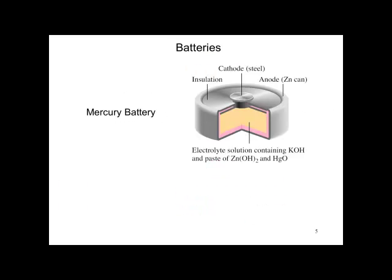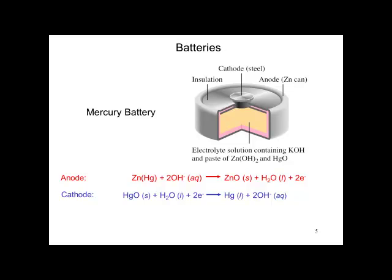Another common battery is the mercury battery. Here we have an anode of the zinc can. The cathode is the little nipple in the middle, the steel. The electrolyte is a solution containing potassium hydroxide and a paste of zinc hydroxide and mercury oxide. The anode is the zinc being oxidized. The cathode is the mercuric oxide being reduced to mercury, and this is the overall reaction. Since this battery generates liquid mercury when it's used up, it's a good reason not to dispose of it improperly.